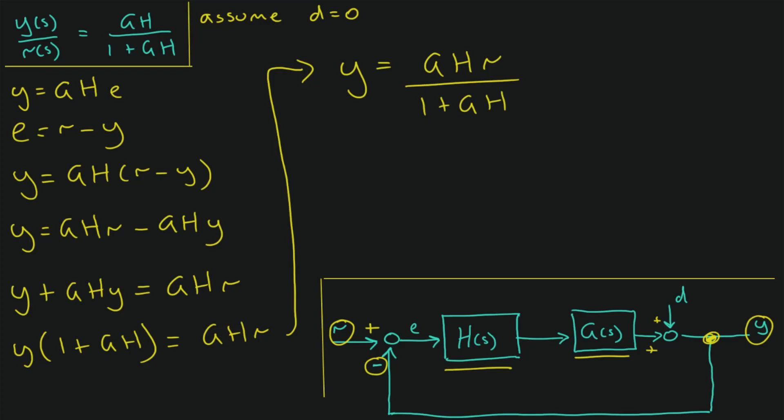And if we rearrange this, we see that Y is equal to GHR over (1 plus GH). And then finally, we divide by R. And this is exactly what we're looking for. So we found the transfer function from our input R to our output Y.